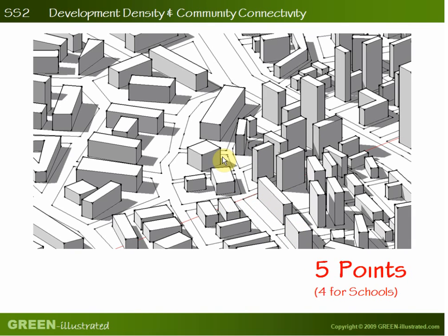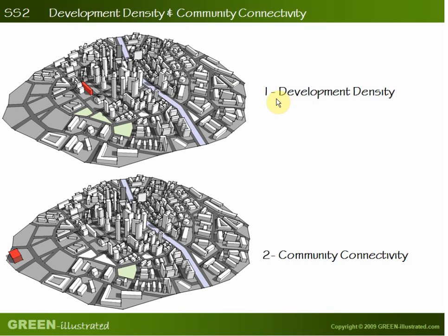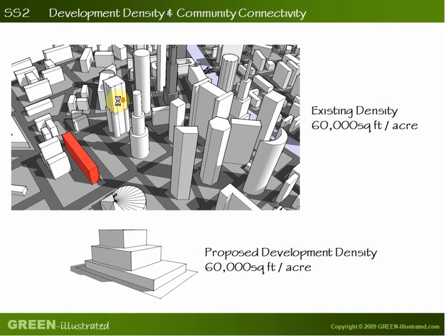There are two paths for achieving this credit. The first is development density and the second is community connectivity. The first path encourages you to select sites within an existing urban fabric. The second deals with the special situation where the immediate surroundings of the site are low density, but the intent of the credit is still achieved.